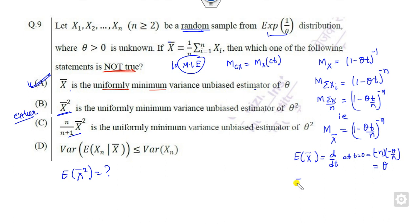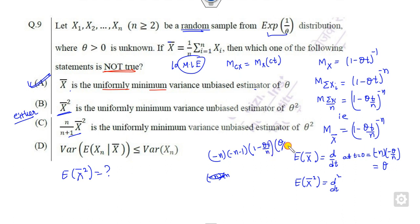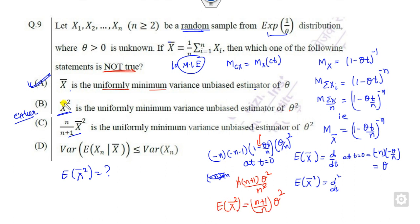But we need to find what is not true. How do you find the expected value of x-bar squared? That requires taking the second derivative of the MGF. The second derivative evaluated at t equal to 0 gives n times n plus 1, times theta squared upon n squared — so n plus 1 upon n times theta squared. This means this value cannot equal the expression given in the option, so that option is a wrong statement. And you can verify that n upon n plus 1 times this equals theta squared. So the right answer is option B, because that is the not-true statement.